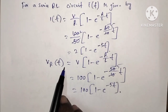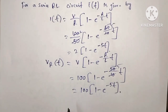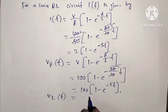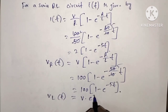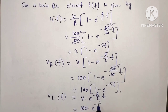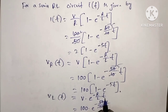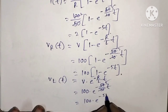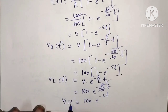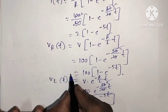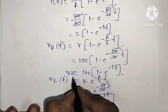Next, the voltage across the inductor Vl of t. The formula for Vl of t is given by V into e power minus R by L into T. Substituting V equal to 100, R equal to 50, L equal to 10: Vl of t equal to 100 into e power minus 5T. This is the voltage across the inductor.